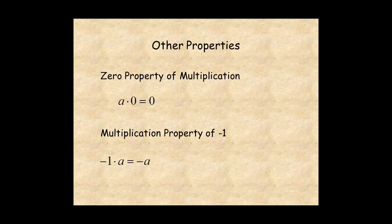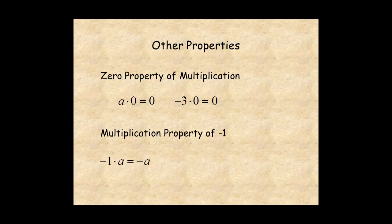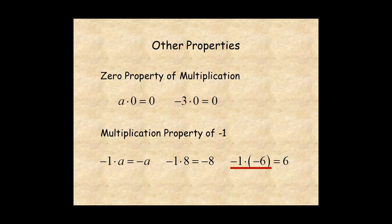There are two other properties related to the identity and inverse properties. The zero property of multiplication says that any number multiplied by zero is zero. For example, negative three times zero is zero. The multiplication property of negative one says that if you multiply a number by negative one, you get its inverse. For example, if you multiply eight by negative one, you get negative eight. On the other hand, if you multiply negative six by negative one, you get plus six.